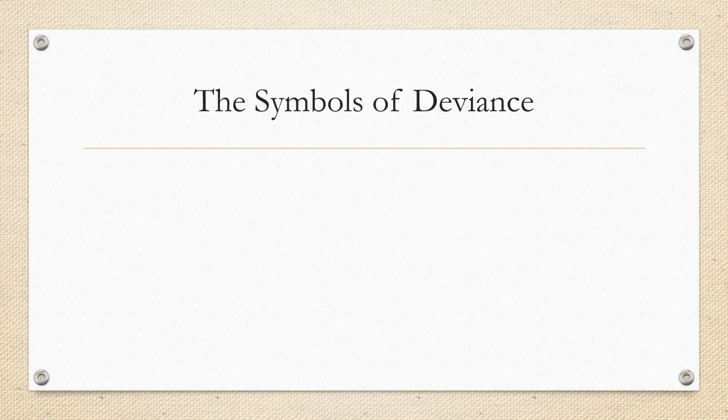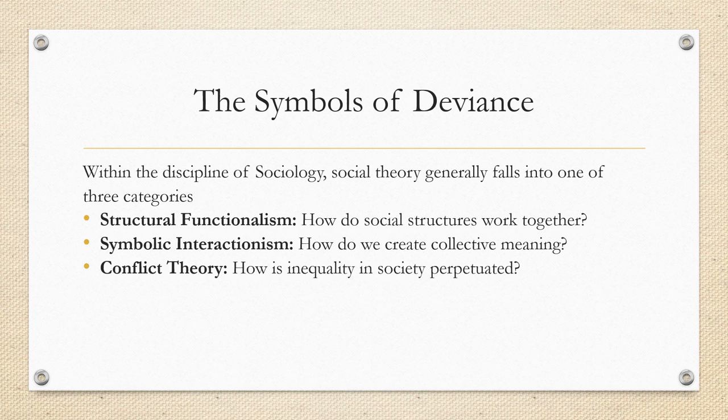So let's first look at these symbols of deviance, and this is largely based on symbolic interactionism. Within the discipline of sociology, social theory generally falls into one of three categories: Structural Functionalism — how do social structures work together? Symbolic Interactionism — how do we create collective meaning? And also Conflict Theory — how is inequality in society perpetuated?